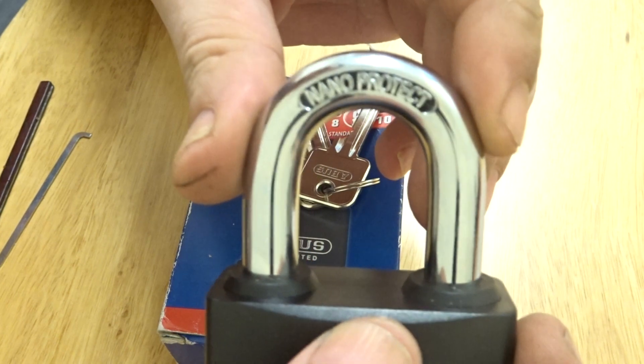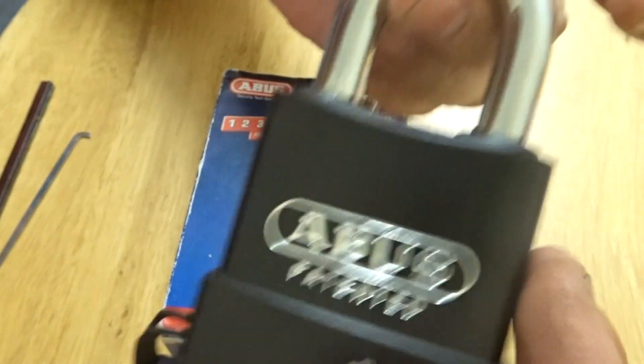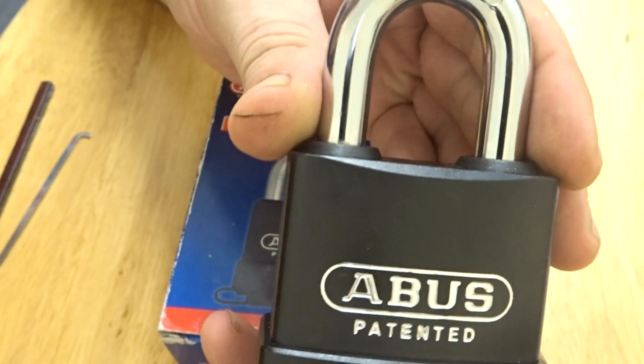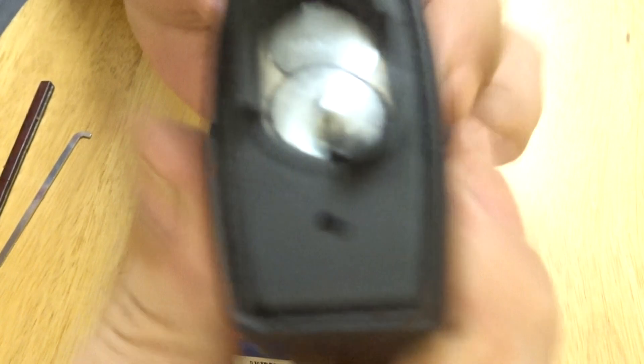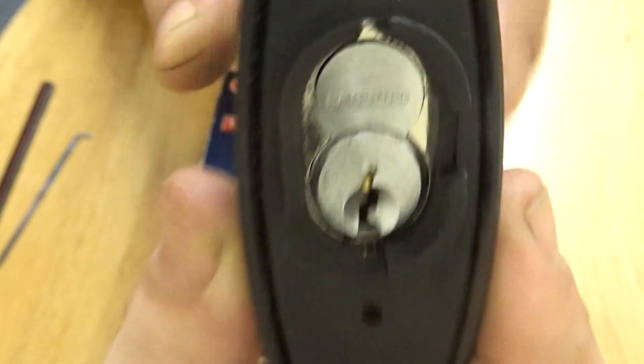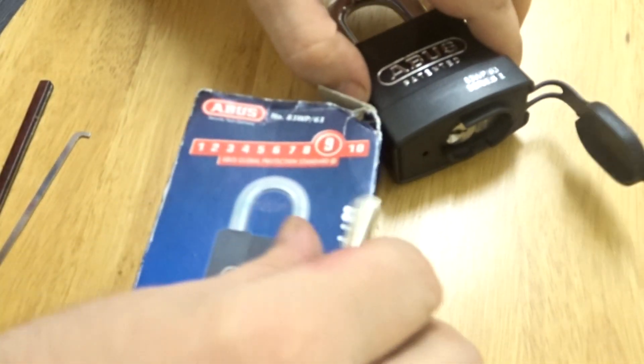As you can see it's got the nano protection which is for corrosion, so like you'd have these kind of locks at the seaside where there's salt and things like that. And there's your core, painted Abus core. There's your key bit in here.